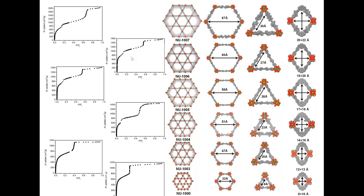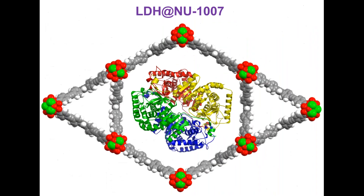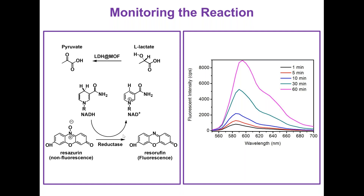We take this material and we load LDH. How do we monitor the reaction? We take our composites and the free enzymes, go from pyruvate to lactate, and use a non-fluorescent molecule that fluoresces upon catalysis — and it doesn't return back. This allows us to monitor the fluorescence and count how our materials are doing: more fluorescent molecules means higher catalysis efficiency.